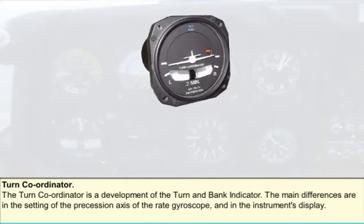The gyroscope is spring-restrained and is mounted so that the axis is about 30 degrees with respect to the aircraft longitudinal axis, thus making the gyroscope sensitive to banking of the aircraft as well as to turning. A turn is normally initiated by banking the aircraft — the gyro will precess and this in turn will move the aircraft symbol to indicate the direction of bank and enable the pilot to anticipate the resulting turn.